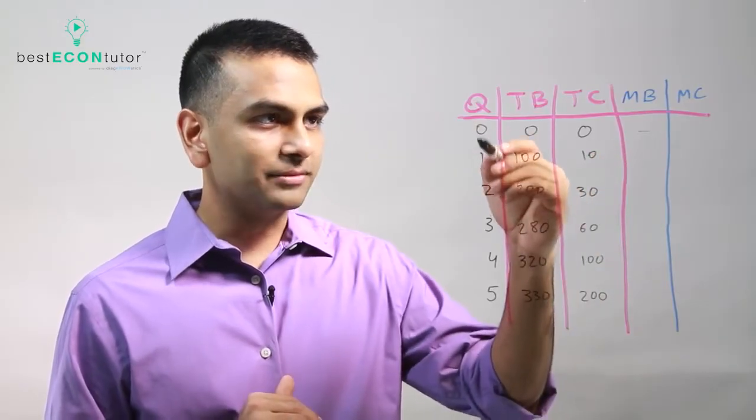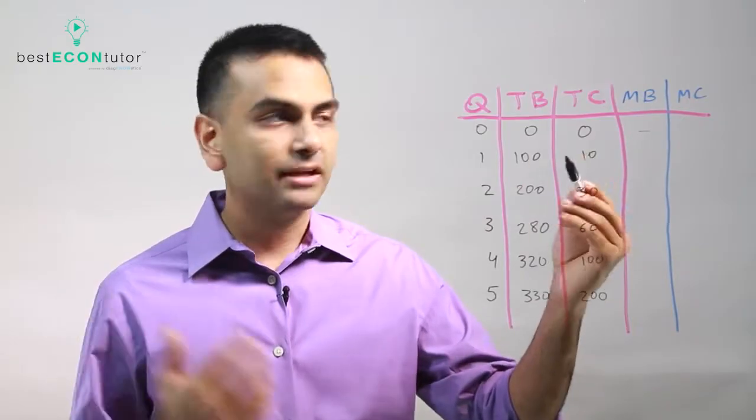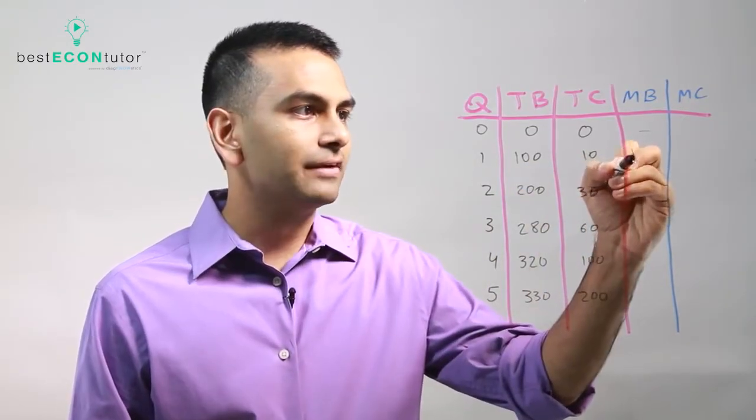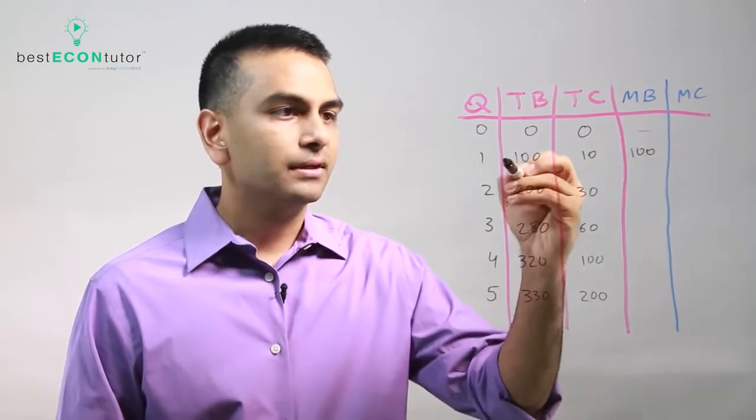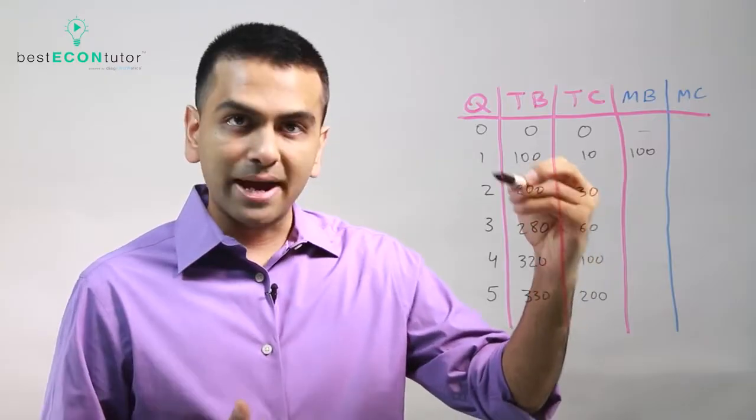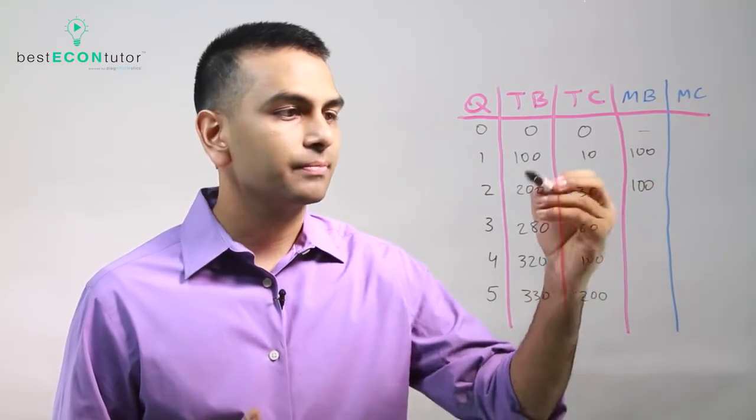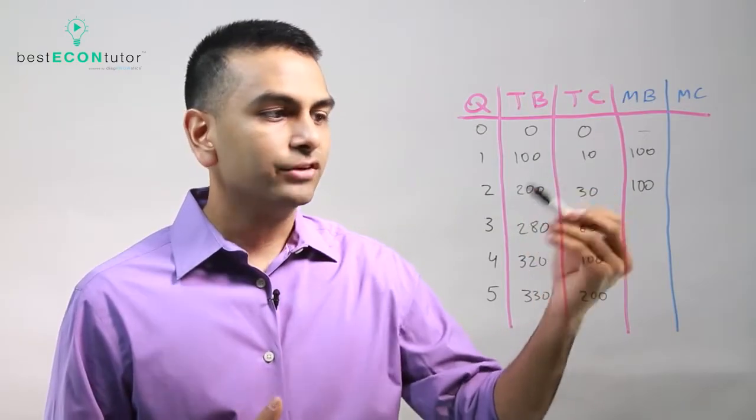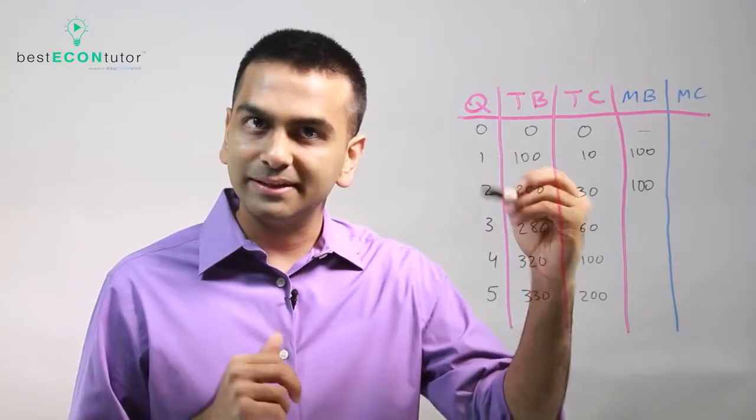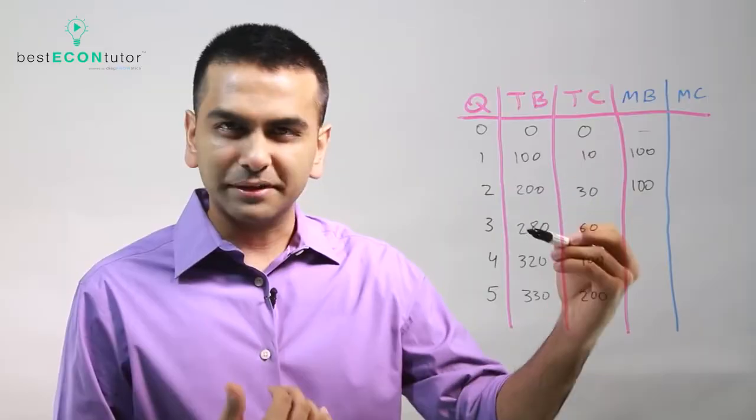Well, going from zero to one house your benefit goes up by a hundred, so your marginal - marginal just means the next value - your marginal benefit for that first house was a hundred. Now going from one to two, it also went up by a hundred, so your marginal benefit there was also a hundred because that's how much the second one added. Really you're just finding the difference - it's the change in the total benefit divided by the change in quantity, but here the quantity is going up by one every time so we're just looking at the difference.